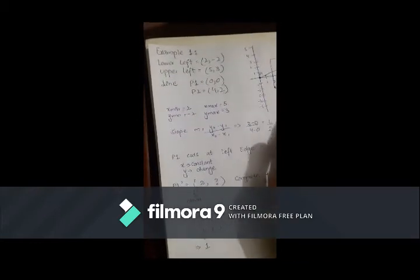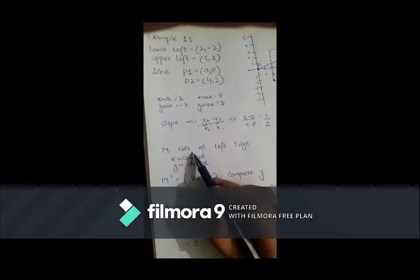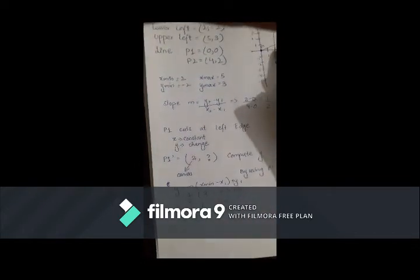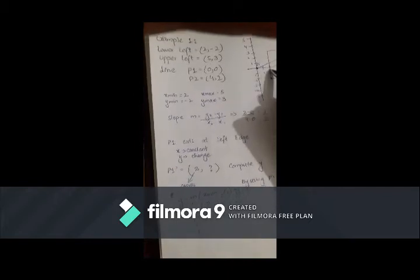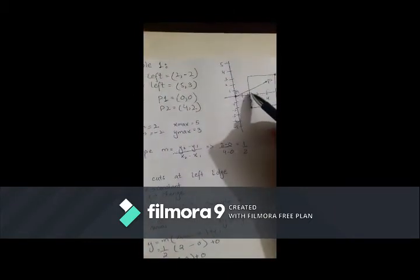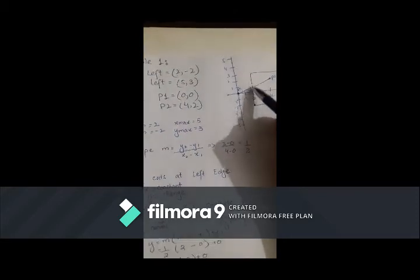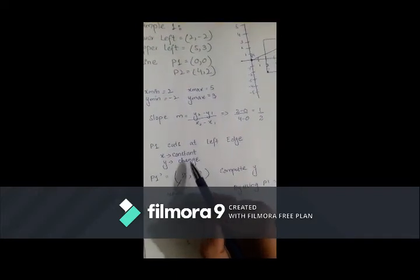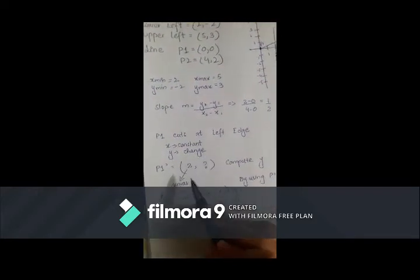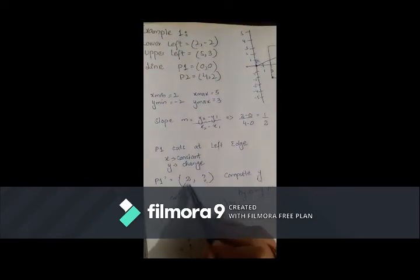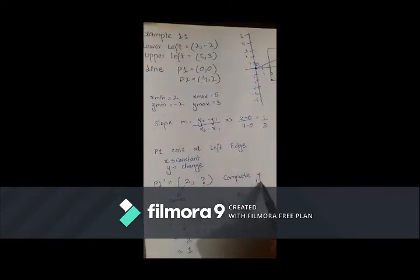Next, we will check on which edge will be cut. So, P1 cuts at the left edge. Left edge, when you cut it, you can see here. X is constant, Y is change. So, we have to compute the Y point to represent canvas's minimum point.